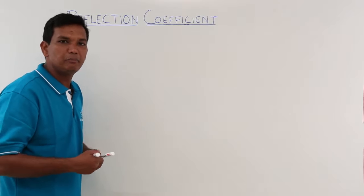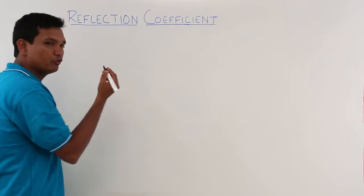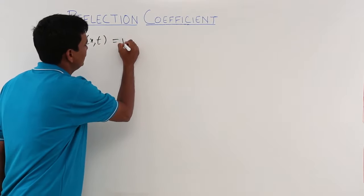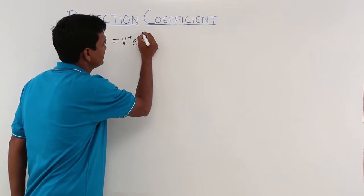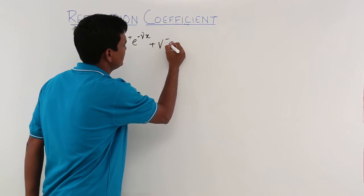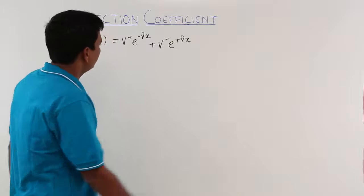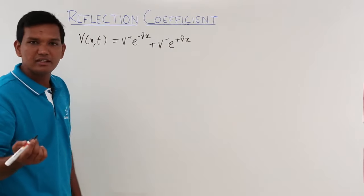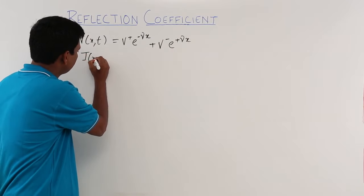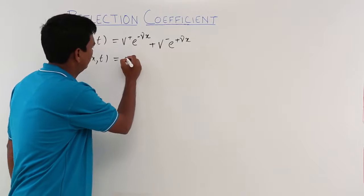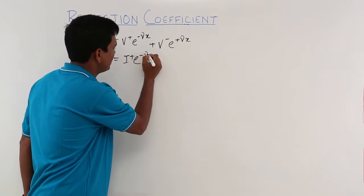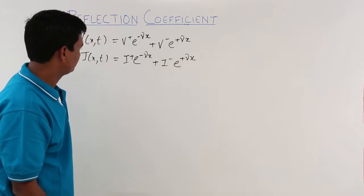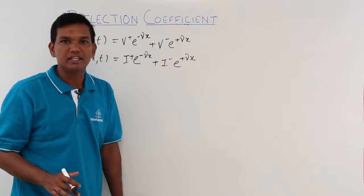As we already know, the basic voltage equation in the case of a transmission line in space and time was given by V(x,t) = V+ e^(-γx) + V- e^(+γx). Remember, this is the peak or RMS value — we are not talking about the instantaneous value. Similarly, the current equation in space and time is given by I(x,t) = I+ e^(-γx) + I- e^(+γx).